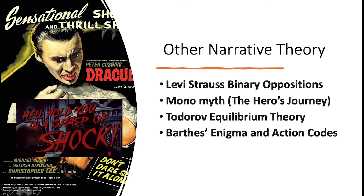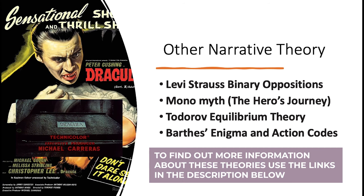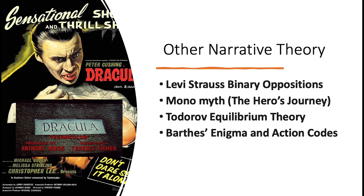There are other narrative theories you can apply to your film, such as Levi-Strauss's Binary Oppositions, the Monomyth (also known as the hero's journey), Todorov's equilibrium theory, and Barthes' Enigma and Action codes. In the next video I will show you how to do a textual analysis of a key scene from the film you've chosen to analyse — you'll look at visual codes, technical codes, and representations of characters.